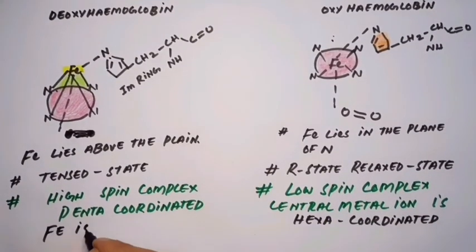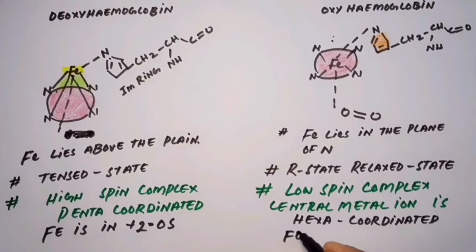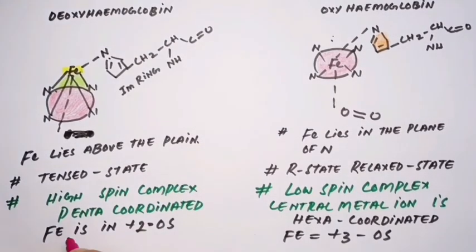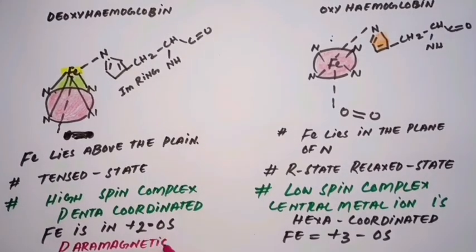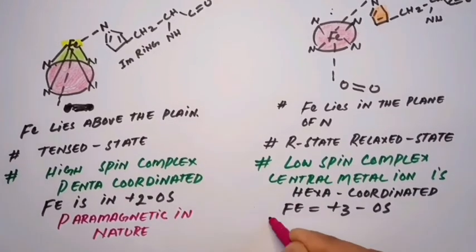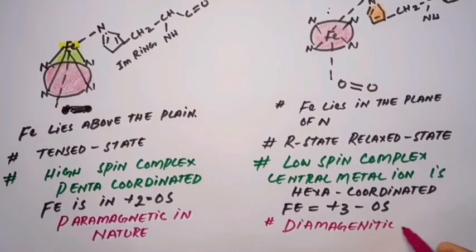In deoxygenated form, iron is in the plus two oxidation state. In oxygenated form, iron is in the plus three oxidation state. The deoxygenated form is paramagnetic while the oxygenated form is diamagnetic in nature.